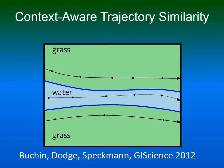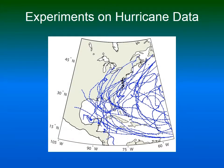We tested our similarity measure on a dataset of hurricane tracks. We used the hurricanes over the North Atlantic Basin in the years 1995, 2004, and 2005. This data is provided by NOAA, the National Oceanic and Atmospheric Administration. The tracks are regularly sampled every six hours. In total, we had 48 hurricanes. Furthermore, we used the global coastline dataset for distinguishing between land and sea.